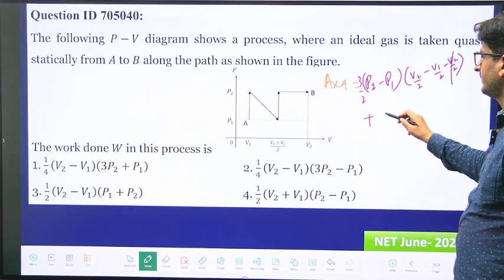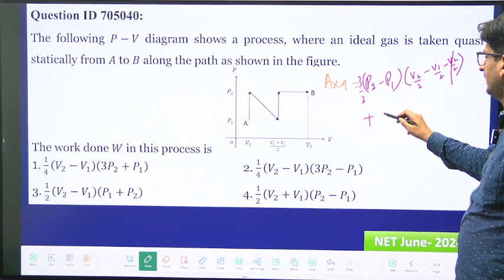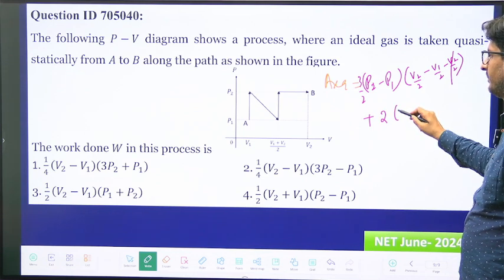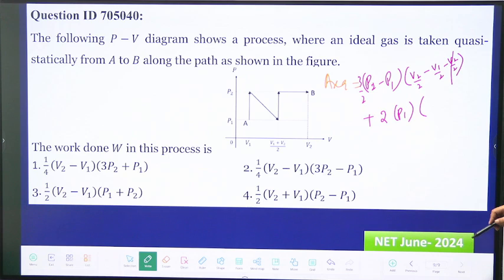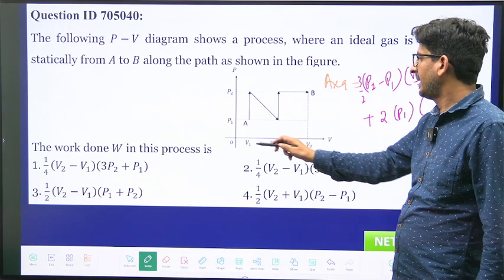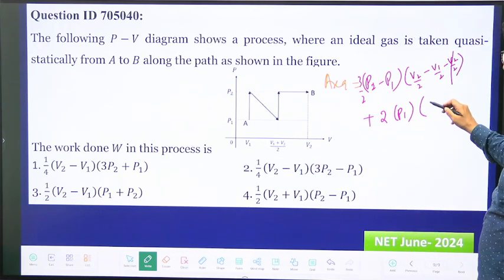So 3 by 2 this, and then plus area of this and area of this. So area of this will be I will just take 2 times p1 and this minus this, so it will be...